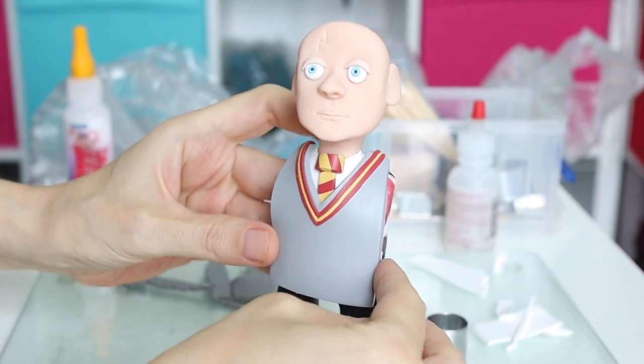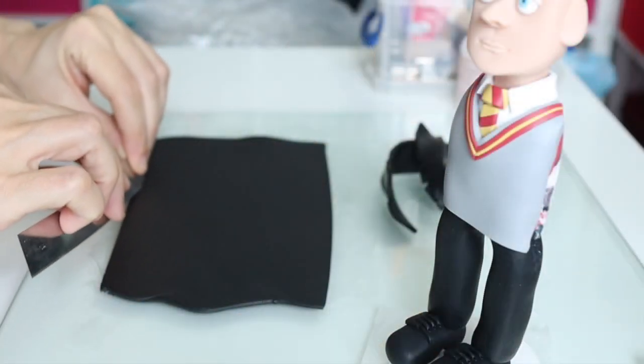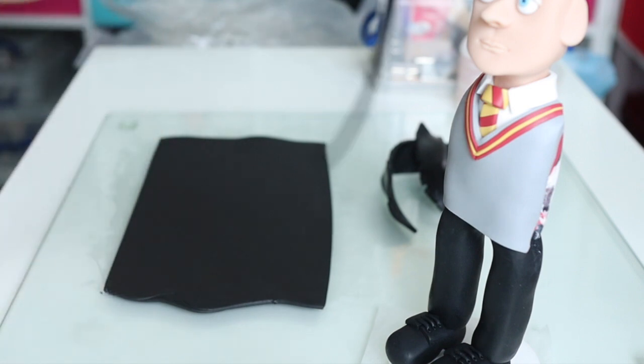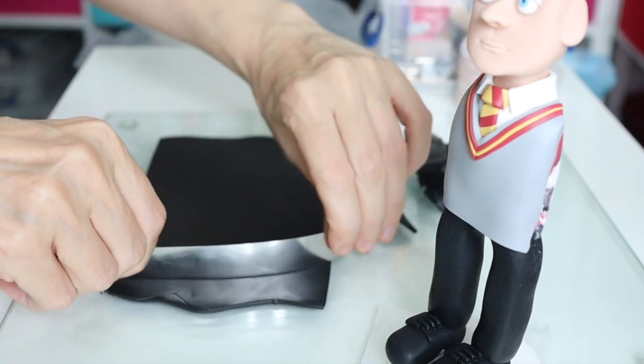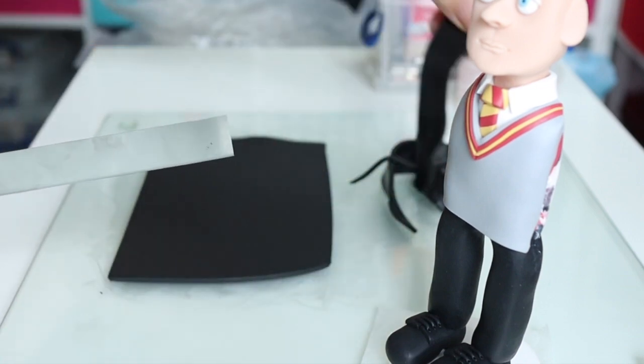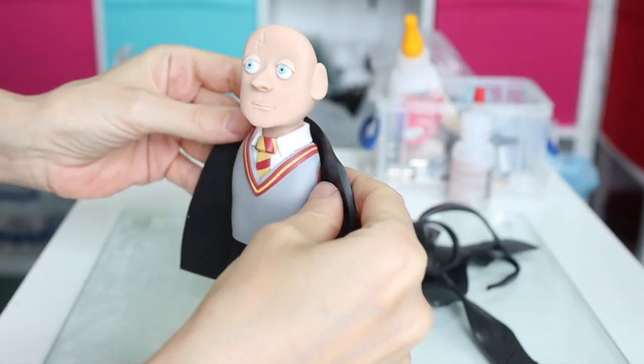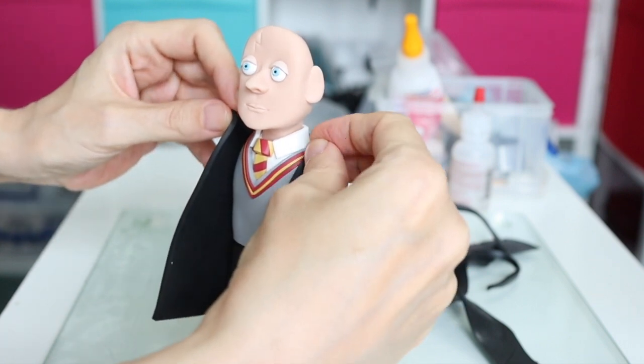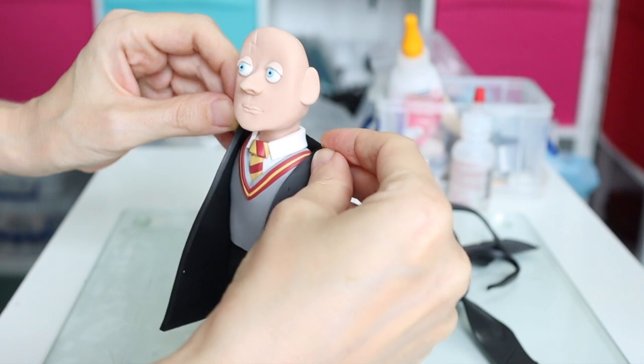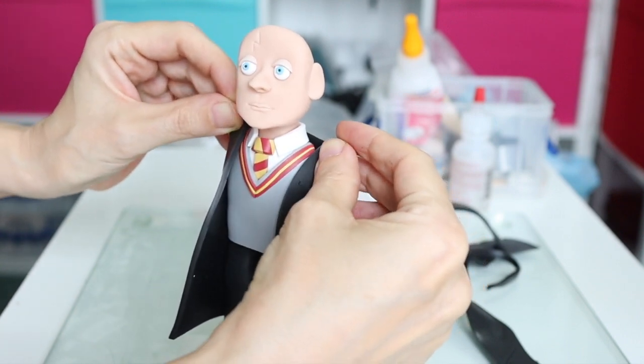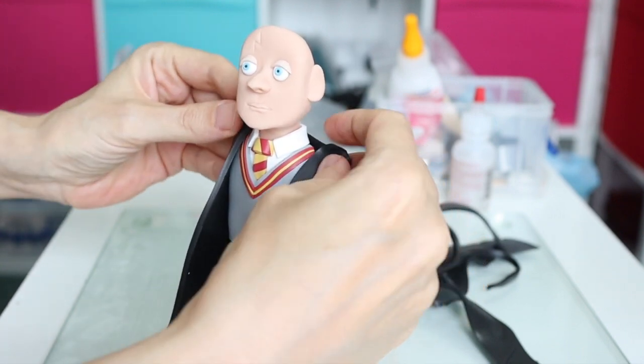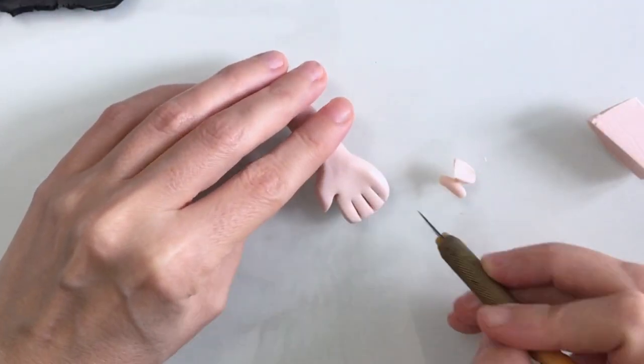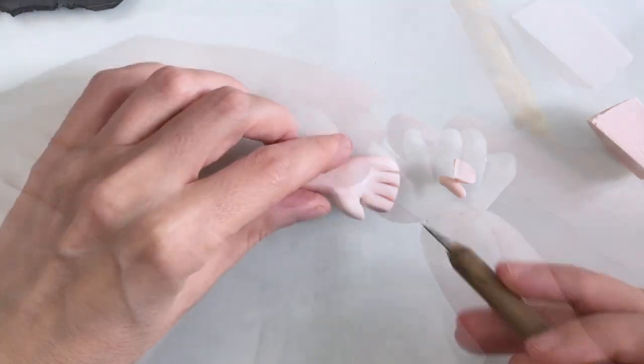Now I can move on to his robe or his cape. I've just got some black Fimo here - I use Fimo Professional clay if you're interested in what I use. Incidentally, I do have a list of the tools that I use pretty regularly down below in the description, so by all means go and take a look at those. They are affiliate links so I do get a tiny commission if you choose to purchase anything, but that's entirely up to you.